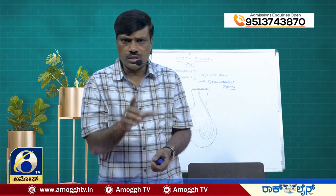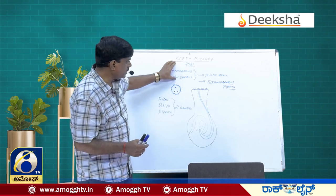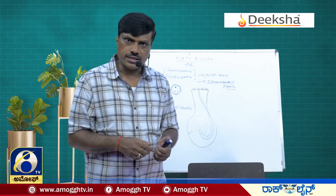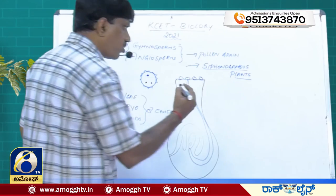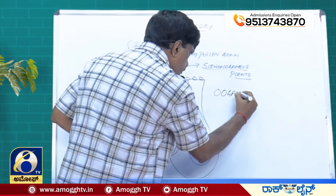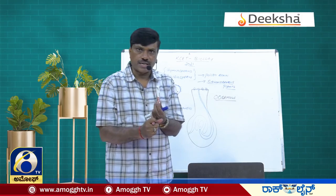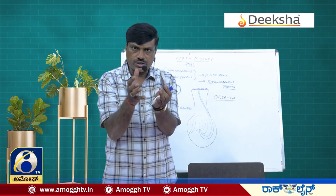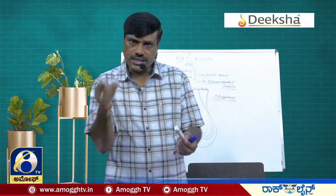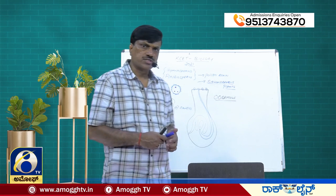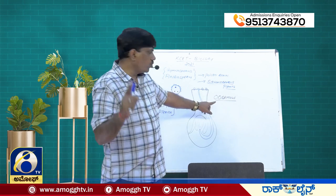To summarize: gymnosperms and angiosperms have non-motile gametes, while algae, bryophytes, and pteridophytes have motile gametes. The type of sexual reproduction seen in higher plants and animals, including humans, is called oogamous reproduction. In oogamous reproduction, the female gamete is large and non-motile, restricted to the reproductive structure, while the male gamete is small and motile, moving towards the female gamete.